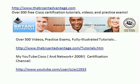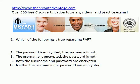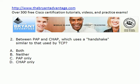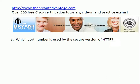Alright, so that's the end of the ten questions. Now we'll go back through and give some answers and explanations. With PAP, unfortunately, neither the username nor the password are going to be encrypted. This is the Password Authentication Protocol, and we really prefer to use CHAP or MSCHAP when we can, because PAP is not particularly secure. It's CHAP that uses a handshake similar to that used by TCP — it's the three-way handshake. The port number used by the secure version of HTTP is 443, where HTTP's port number is 80.